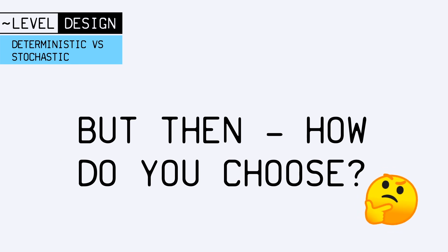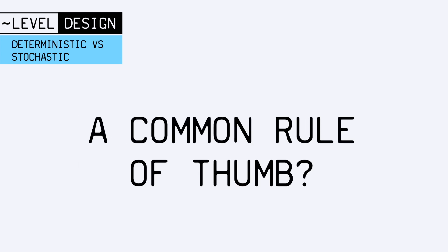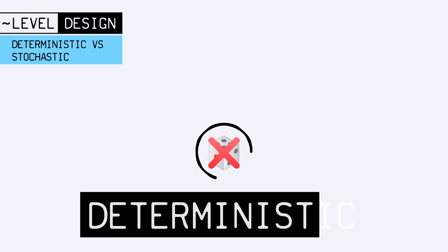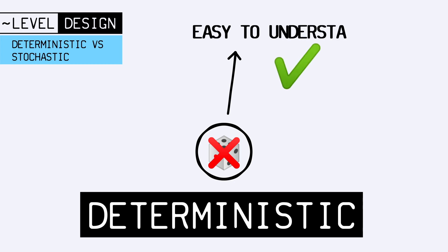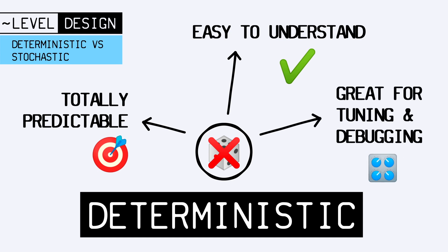When should you use deterministic processes, and when is it better to use stochastic ones? Well, the rule of thumb is usually that deterministic processes are easier to understand and follow as they run, and they offer predictability. You can try and execute your algorithm with some input data and expect a specific result in the end, which is great for tuning or debugging your process while in development.